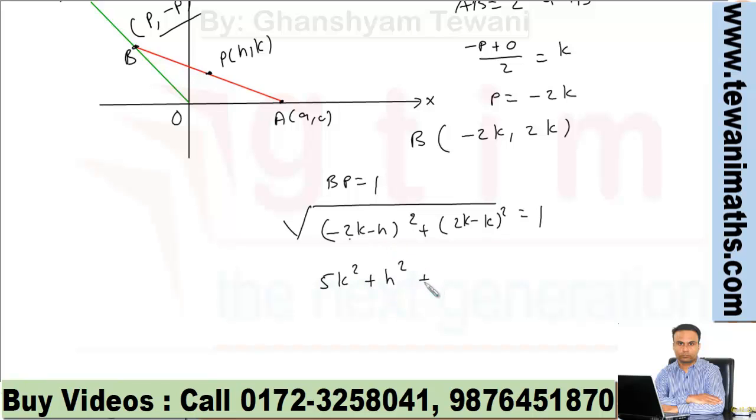Replacing h and k by x and y, we have the locus: x² + 5y² + 4xy = 1. So this is the locus of point P.